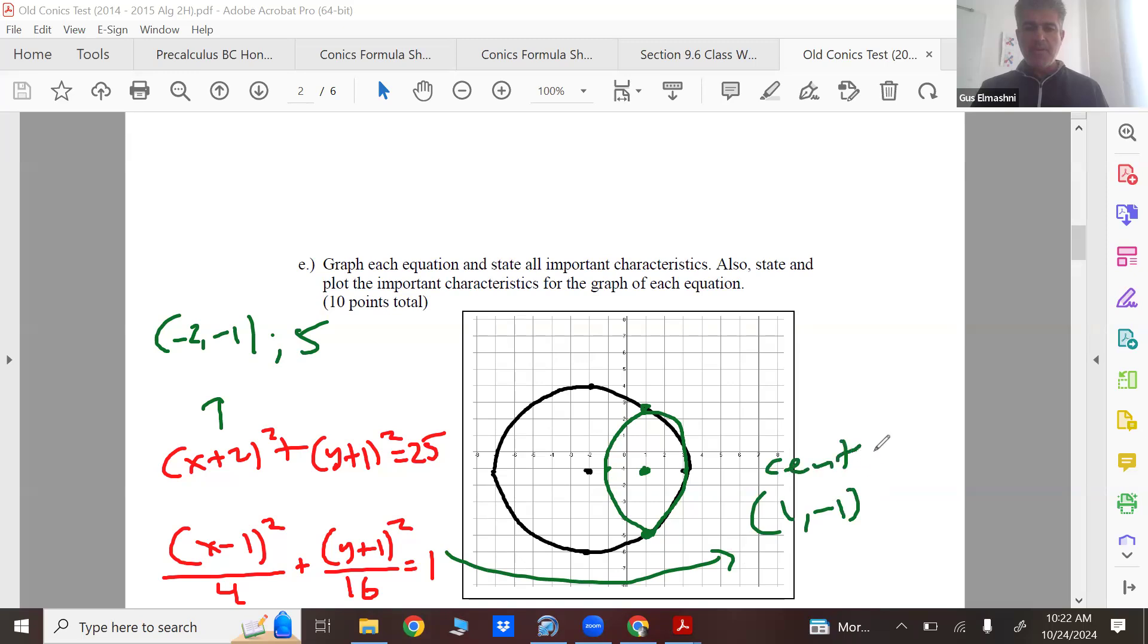That's your center. Your vertices are one comma three I think, and one comma negative five. Your co-vertices should be three comma negative one and one comma negative one.